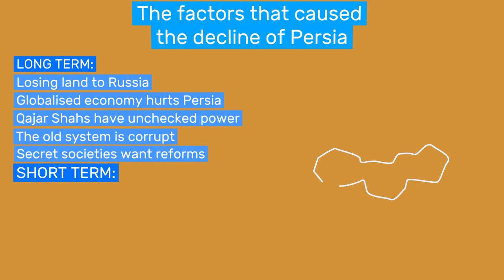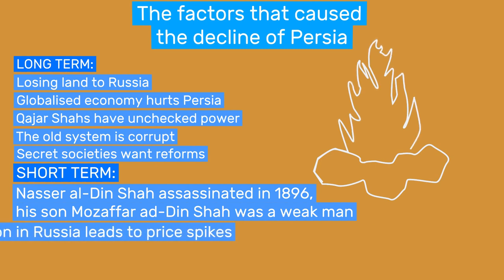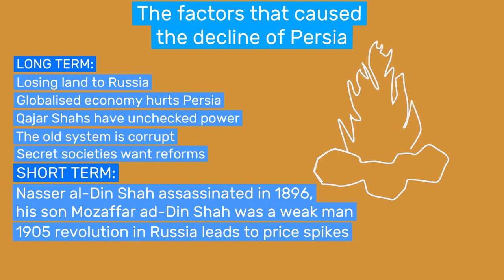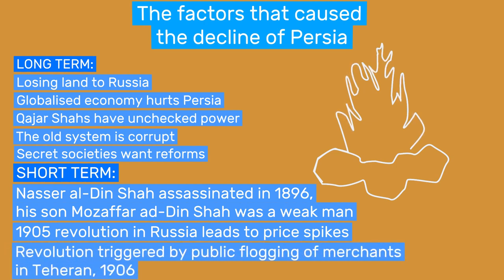Throughout the 1800s, Qajars oversaw a gradual decline of their country while holding a tight grip on power. Nasser ad-Din Shah ruled for 50 years but was assassinated by a religious fanatic in 1896. His successor, Mozaffar ad-Din Shah, was however a weak or possibly mentally challenged man who would play a large role in the upcoming events. Another key event was when in 1905 a short-lived revolution broke out in Russia, which greatly reduced trade flow into the region. Prices of basic commodities started rising and social disorder grew. The straw that broke the camel's back was when a governor of Tehran tried to blame merchants for high sugar prices in 1906 and had them flogged in public. It was this blame-shifting and corruption of high-ranking officials that caused the outrage that turned into a full-scale revolution.